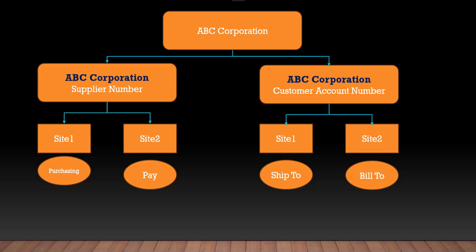For example, a party defined as part of the TCA model could be visualized as both a supplier and a customer, so you don't have to recreate them when you want to deal with them as a customer. For an ABC Corporation entity, it can be created as both a supplier and a customer. The customer ship-to site address can be used as a purchasing site purpose, and the customer bill-to site can be used as a pay site purpose. The trading community model ensures the integrity of your master tables.